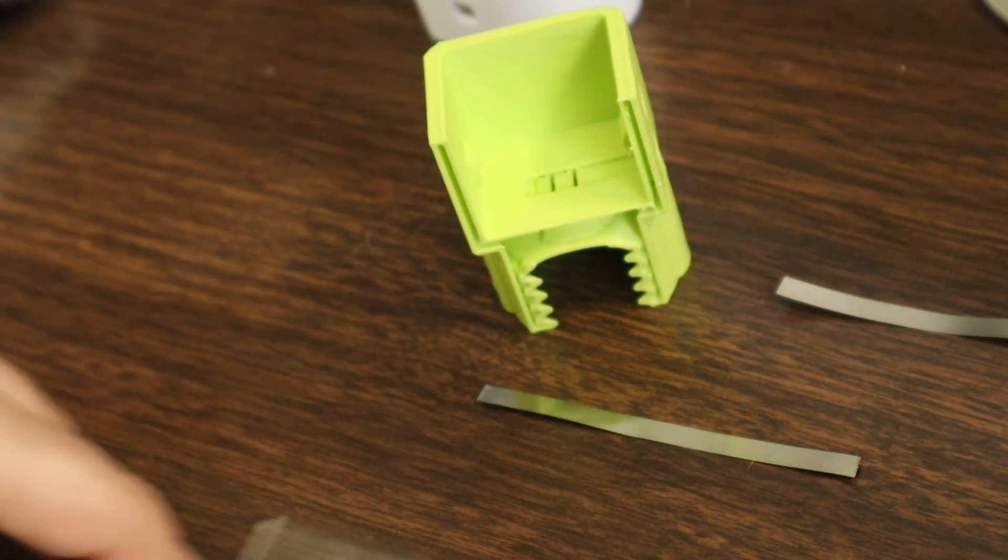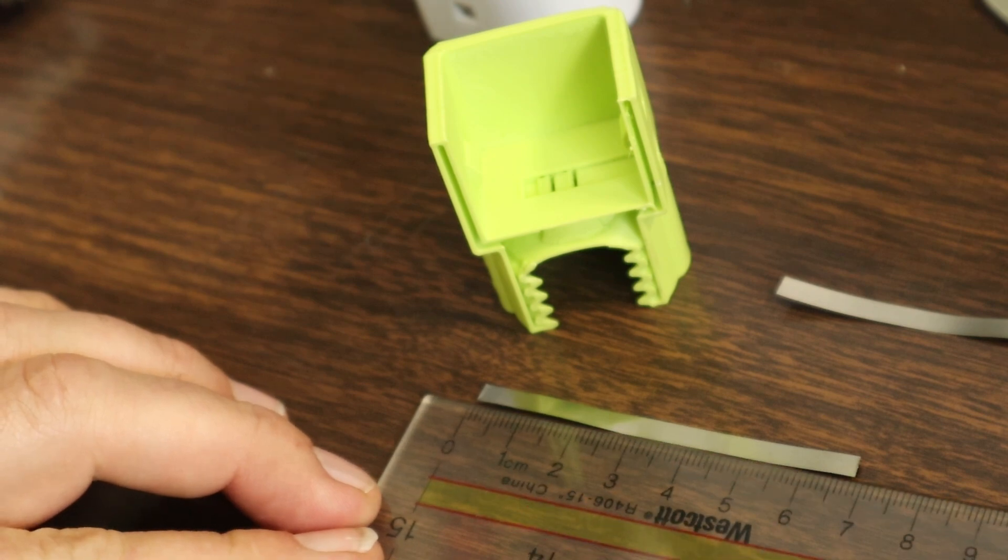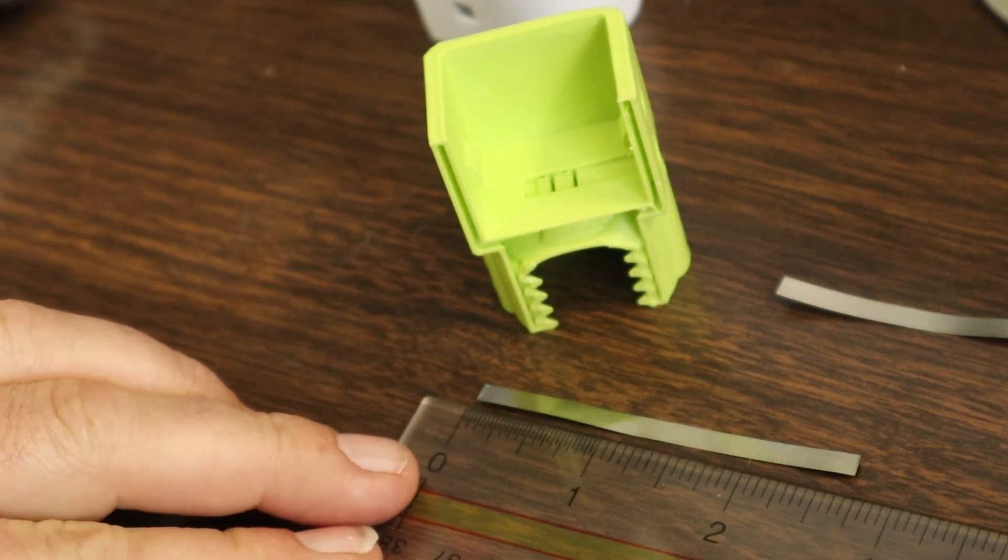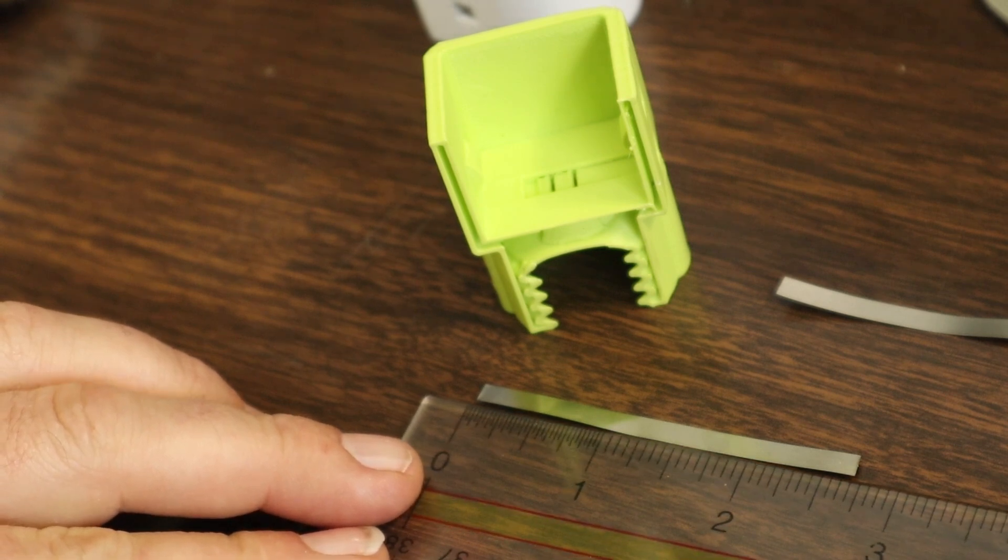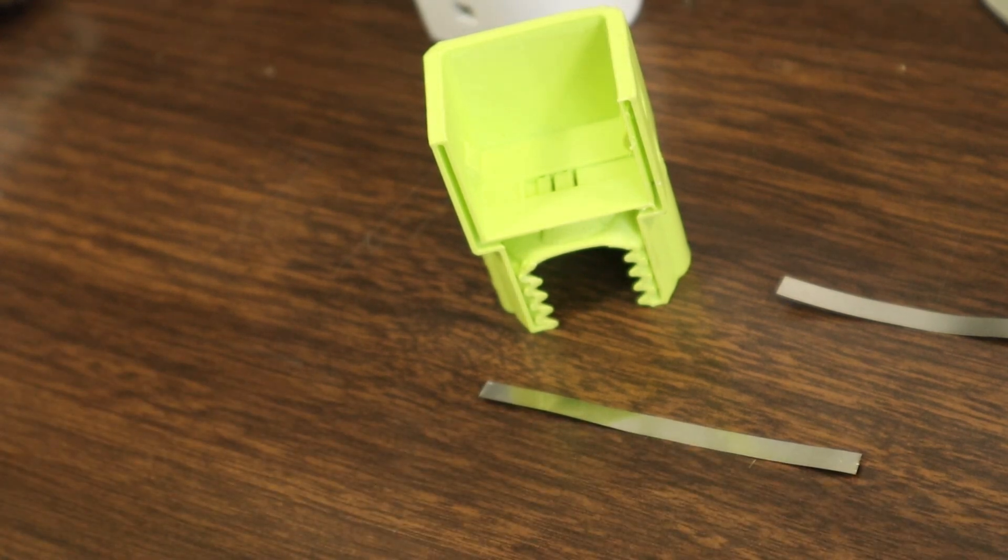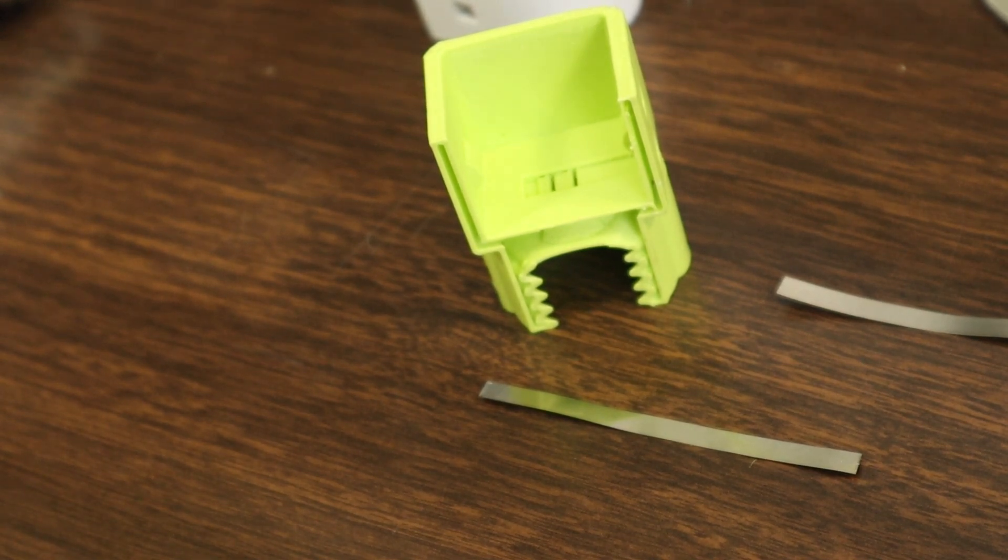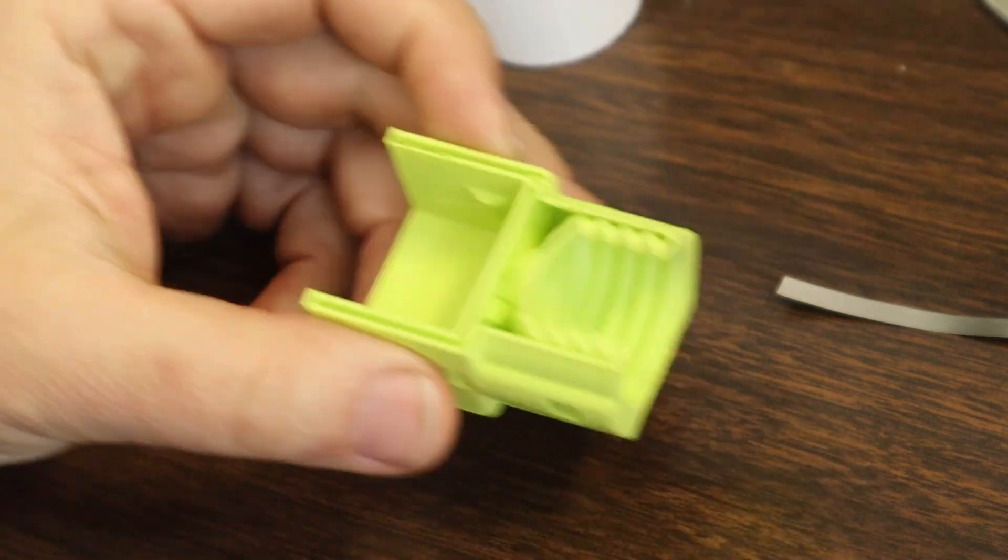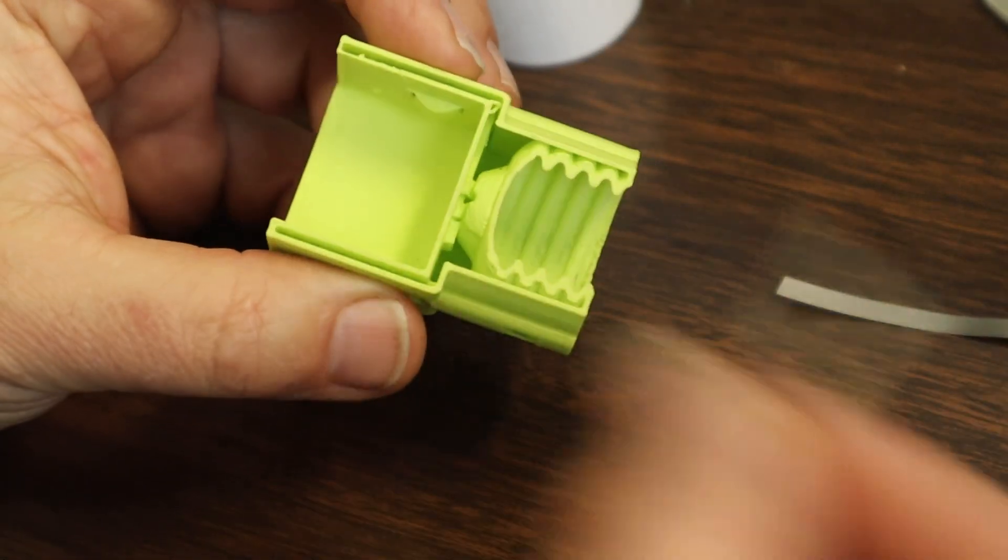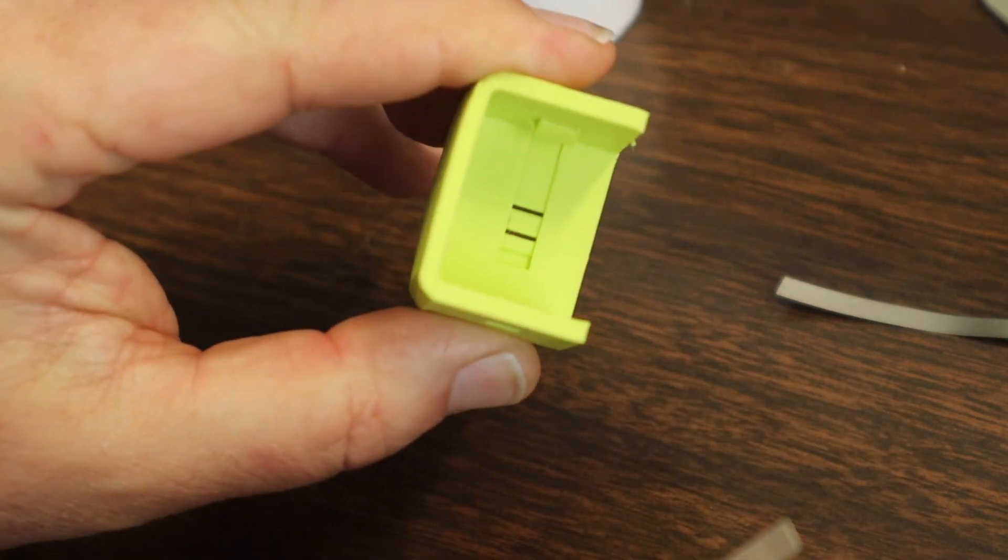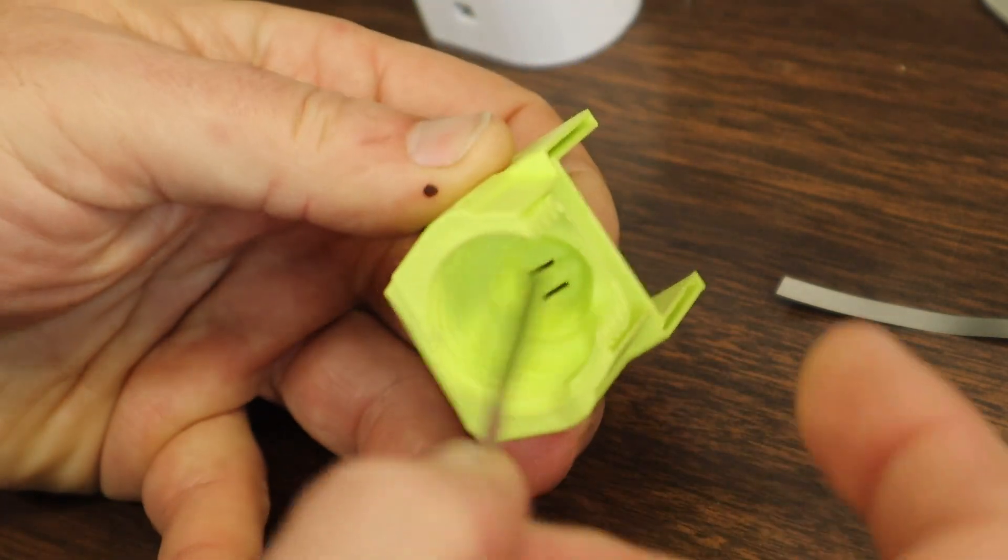So I usually cut these pieces here to about seven centimeters or, you know, two and a half inches or so. Just roughly. It's just got to be long enough to complete the circuit, but you don't want it so long that there's extra material you're weaving through and it actually gets in your way. So what I'm going to do here, push it through the hole.